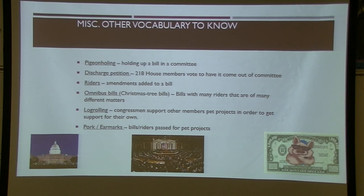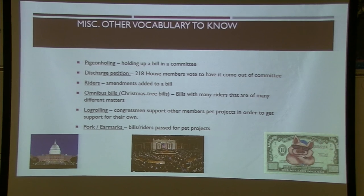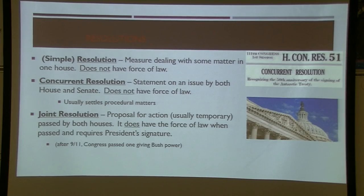An omnibus bill, or Christmas tree bill, has so many different riders attached that everyone gets something out of it, making it easier to pass. This is often how pork barrel politics works. Log rolling is a related tactic: 'I'll vote for your dam on the Arkansas River if you vote for my moped museum in Inverness.' A lot of this is handled by the party whips. Earmarks are the specific pet-project spending items in riders.